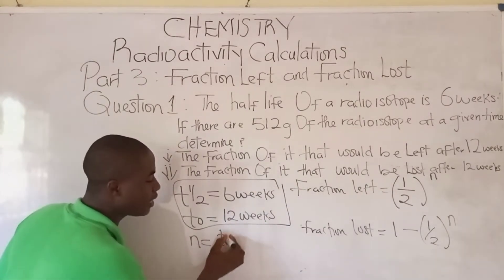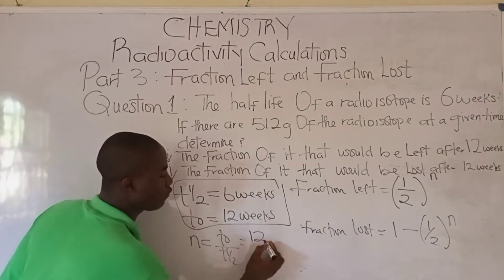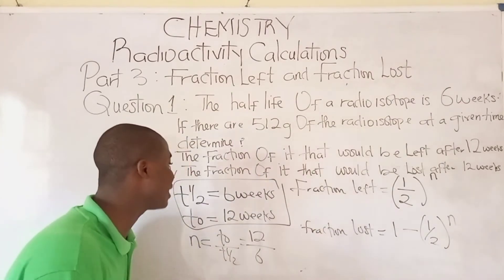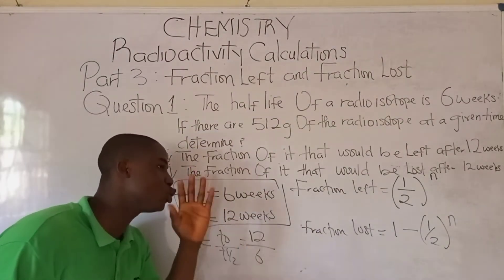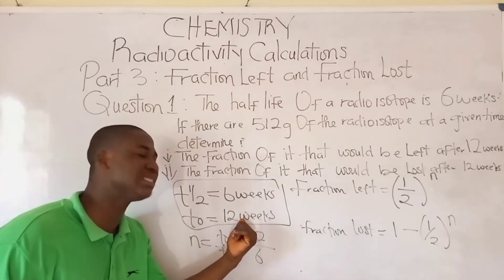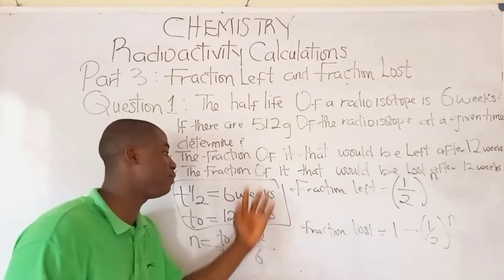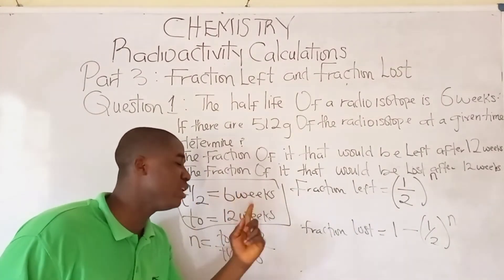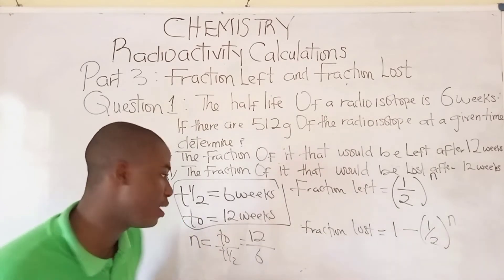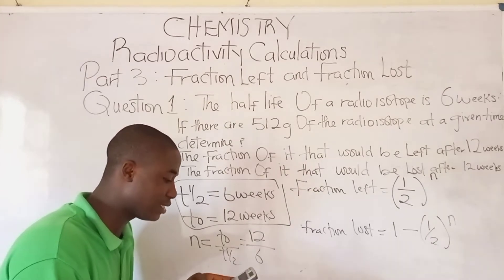How do we get n? It is t₀ over t½. What is t₀? 12 weeks. Over t½, which is 6 weeks. It must be noted that both of these times should be in the same SI unit. So 12 weeks over 6 — 12 over 6 gives 2. Therefore n is equal to 2.